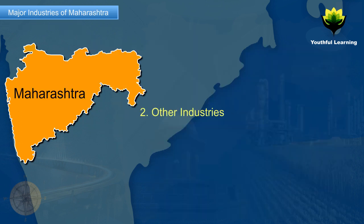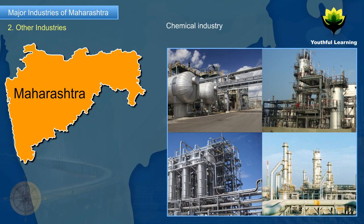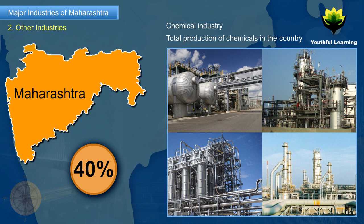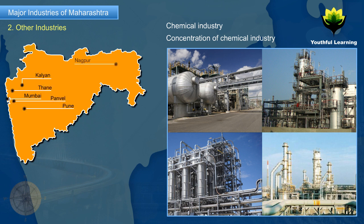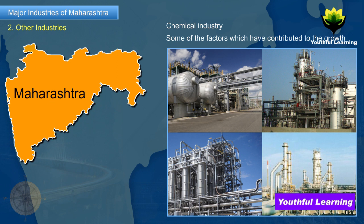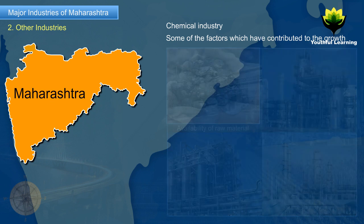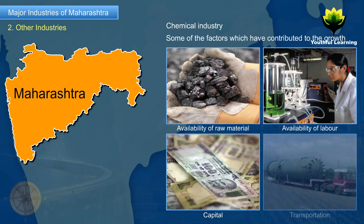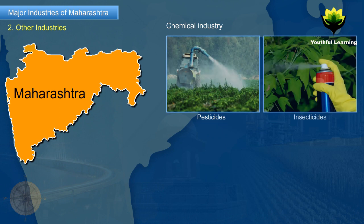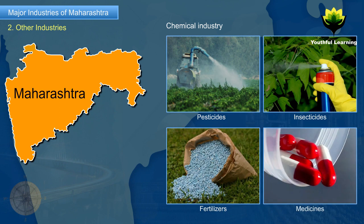Chemical Industry: Maharashtra accounts for 40% of the total production of chemicals in the country. The chemical industry is concentrated in Mumbai, Thane, Kalyan, Panvel, Pune, Nagpur, and Aurangabad. Factors contributing to the growth of the industry include availability of raw material, availability of labour, capital, and transportation. Chemicals are used to manufacture pesticides, insecticides, fertilizers, and medicines.